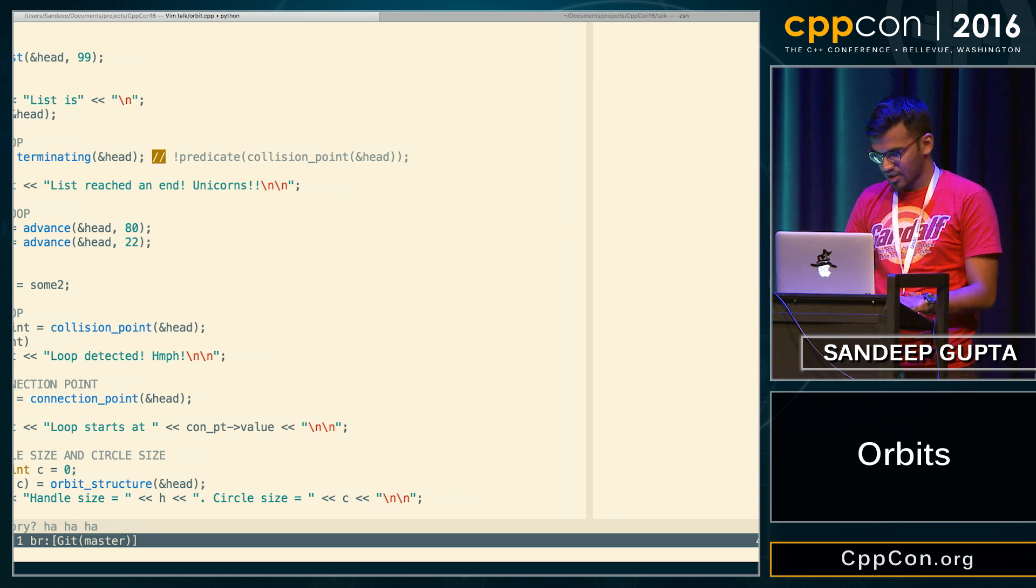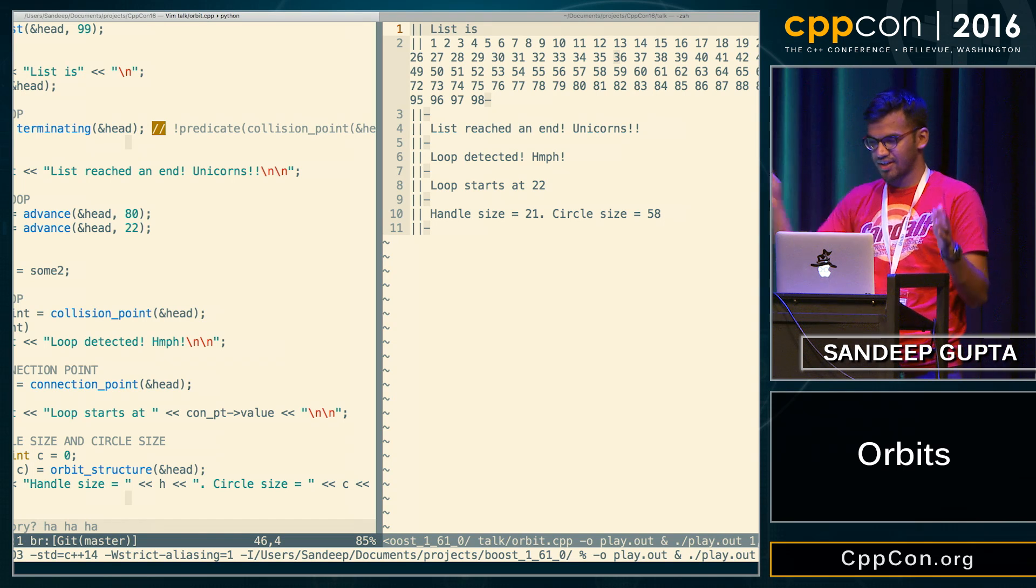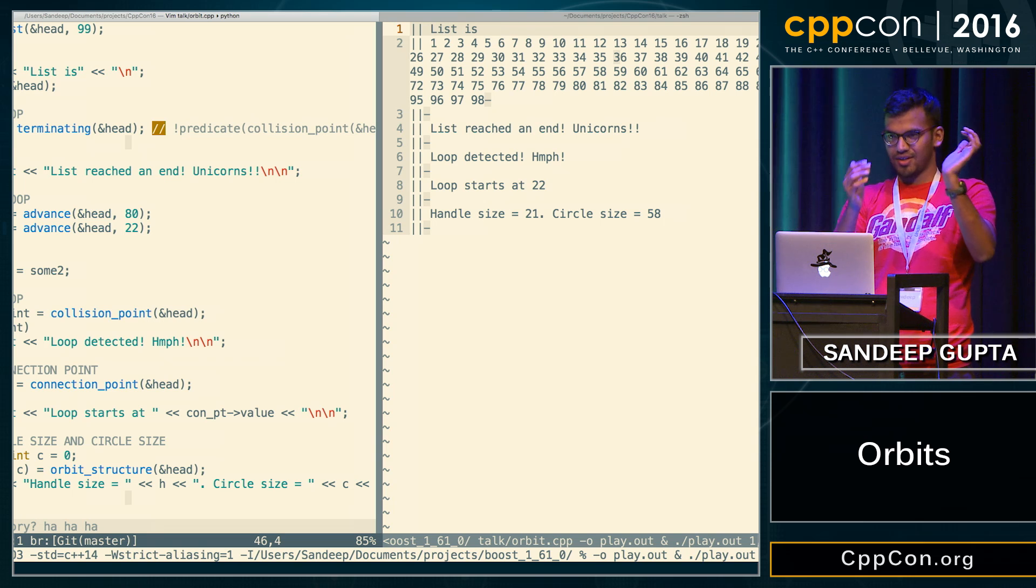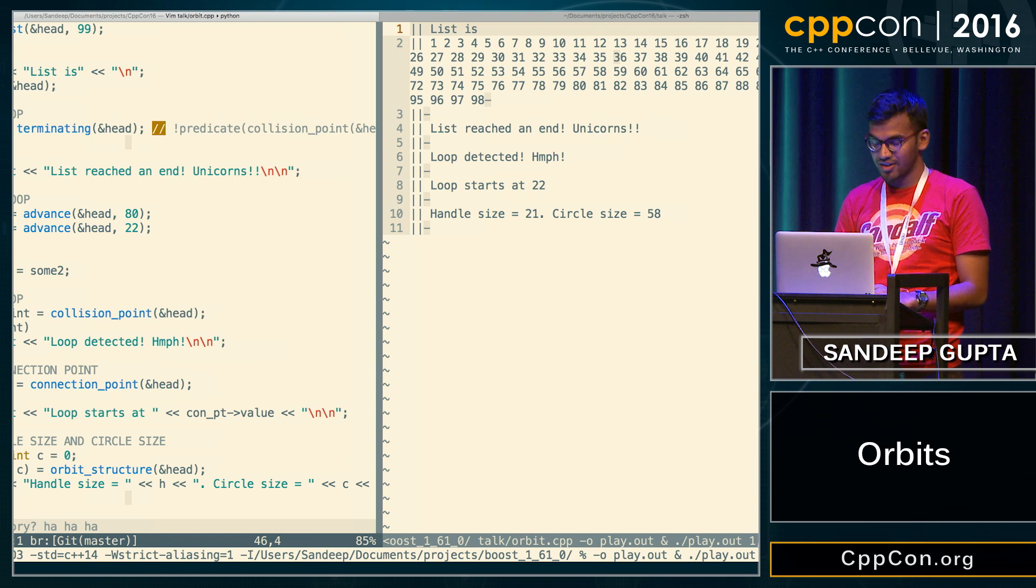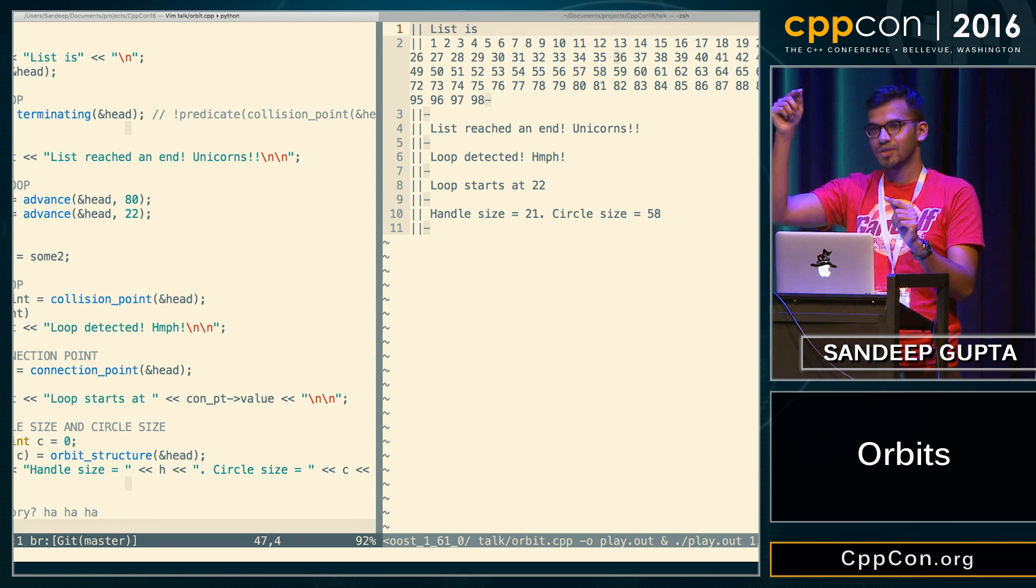So if I run this, it runs pretty good actually. So it prints the list first, which is like 1 to 98. And then it says, list does not have a loop, obviously. And then once we create the loop, it says the loop is detected. And it actually prints loop started at 22. And actually gives you all the decomposable parts that we had. Like 21 is, if your node is pointing at 22, that means from 1 to 21 is your handle size. And the circle size is 58. So it works pretty well. And the good thing is that I only had to implement one collision point function, and everything else is actually based on that. So it's super composable.